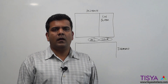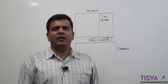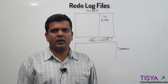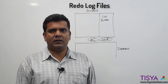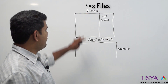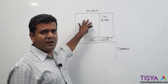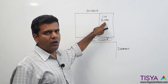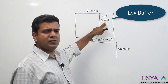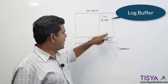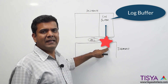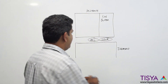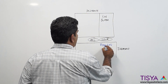In this video I'm going to tell you how redo log files work within the Oracle database. When we have an instance running, we already know there is an area called log buffer, and the contents of the log buffer are written down by the log writer into the database in the form of redo log files.